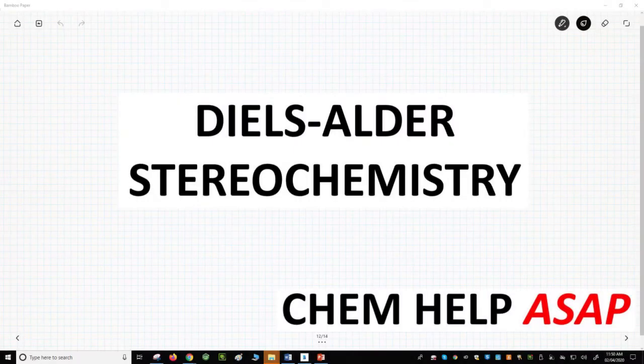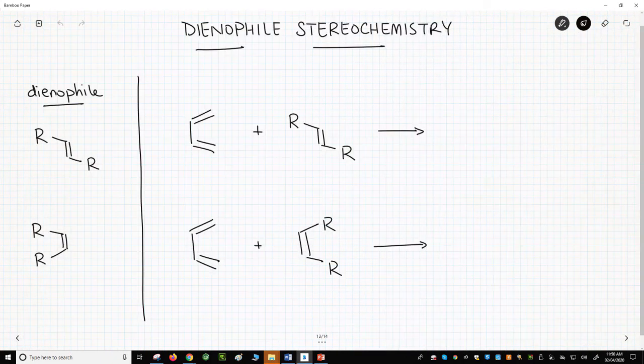Hello from Chem Help ASAP. Let's see how the stereochemistry of the diene and dienophile affect the stereochemistry of the cycloadduct. Let's start with the dienophile because it's easier.